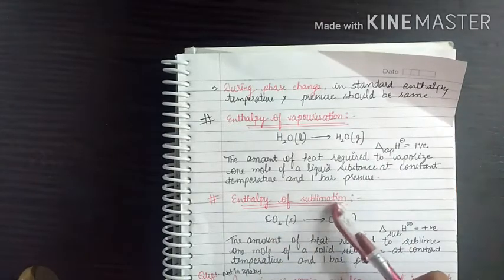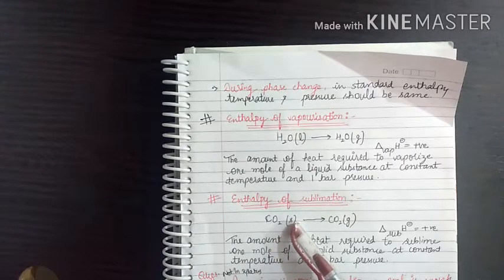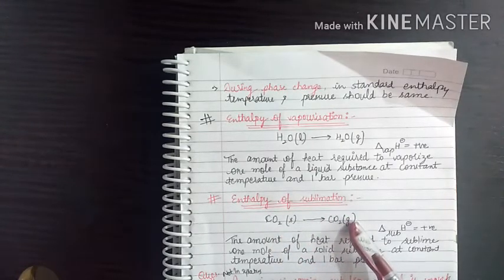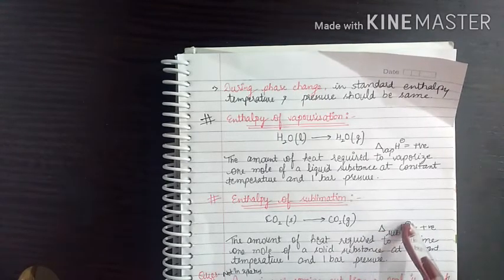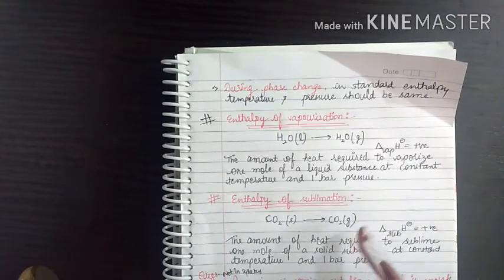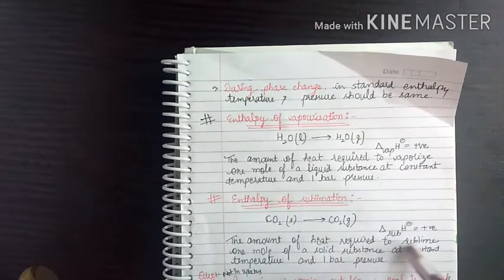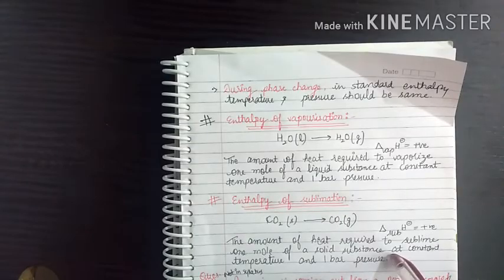Next is enthalpy of sublimation. For example, carbon dioxide — dry ice — changes directly from solid form to gaseous state. We denote this as delta sublimation H at standard state, which is positive, representing the amount of heat required to sublime 1 mole of a solid substance at constant temperature and 1 bar pressure.